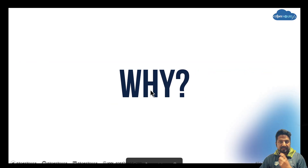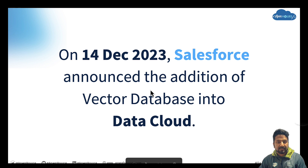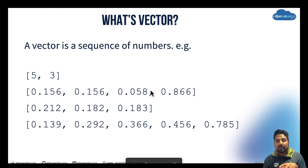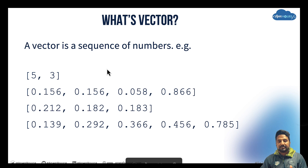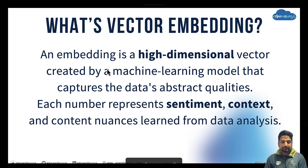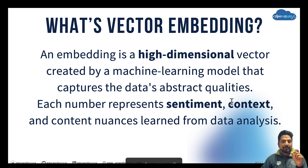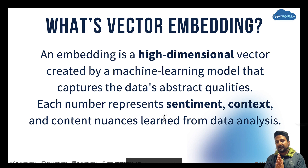The first question that comes to mind is: what is a vector, a vector database, and vector embedding? A vector is simply a sequence of numbers. This is a vector, this is a larger dimensional vector — these are all vectors. Now, why are these vectors important? That's where vector embeddings come into play. These are basically vectors with meaningful numbers where every number can represent a sentiment, a context, or certain nuances that are useful for data analysis. You will understand what vector embedding is and how it derives from the vector concept.